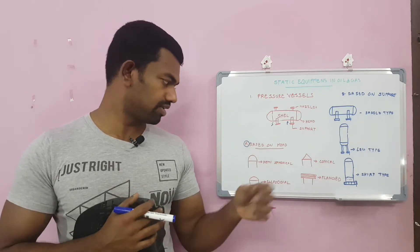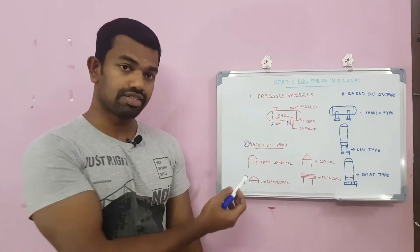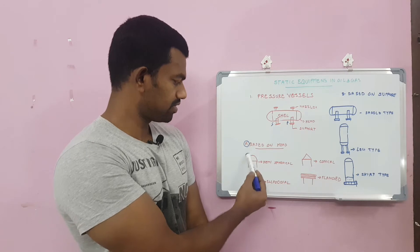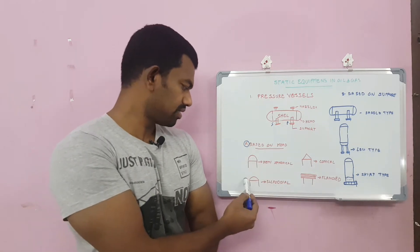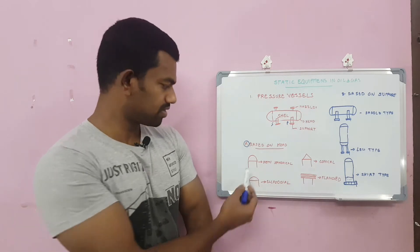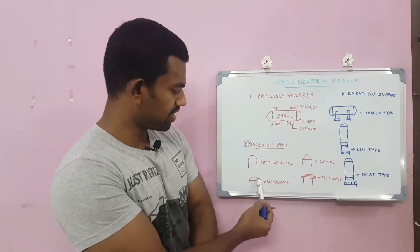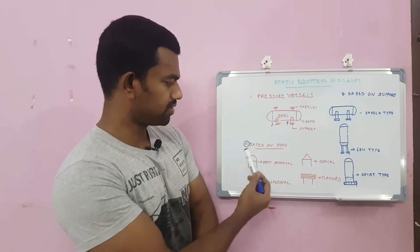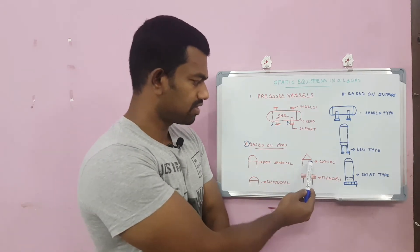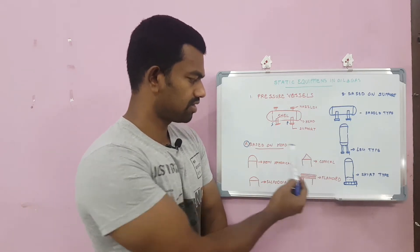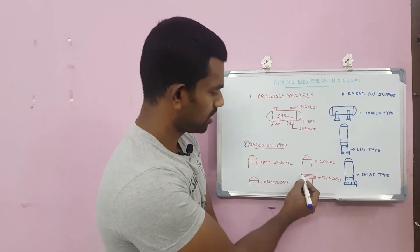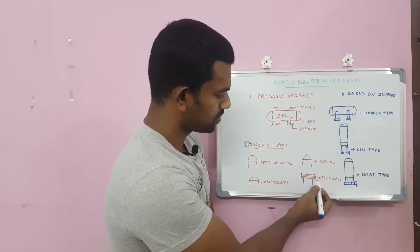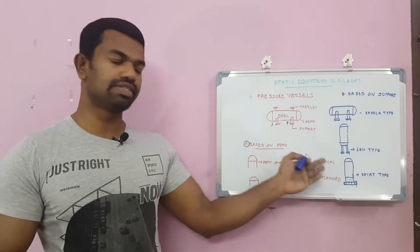How can we classify further? Here as you can see, the shape is a hemispherical shape. This is ellipsoidal shape. This compared to this is comparatively less arc. Here is half round. And the third one is conical head. And here is flanges type. These are based on the head.